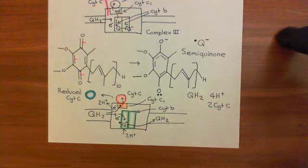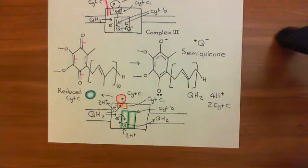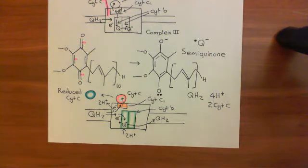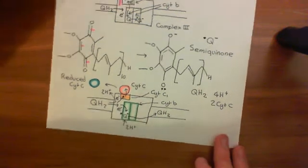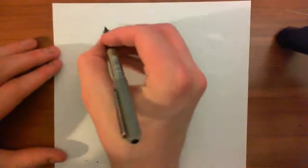Understand this: cytochrome C only carries one electron. It doesn't carry an electron and a proton — it's different to the NAD and FAD molecules. So these reduced cytochrome C molecules are now going to go on to meet complex 4.